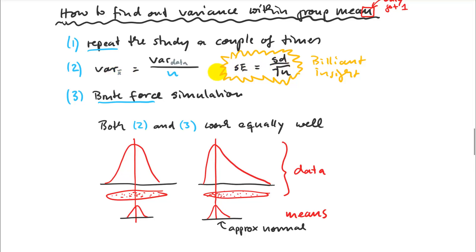This is how multivariate analysis of variance does it — the variance within, or noise term, divided by the signal gives your F-statistic. But you can also do it with a brute force simulation, which is what we'll do with a permutational MANOVA: you actually simulate a repeat study over and over again. Both work amazingly equally well, though simulation requires more computer horsepower — something you couldn't have done in the 1920s when this was invented, but now with computers it's just as easy.